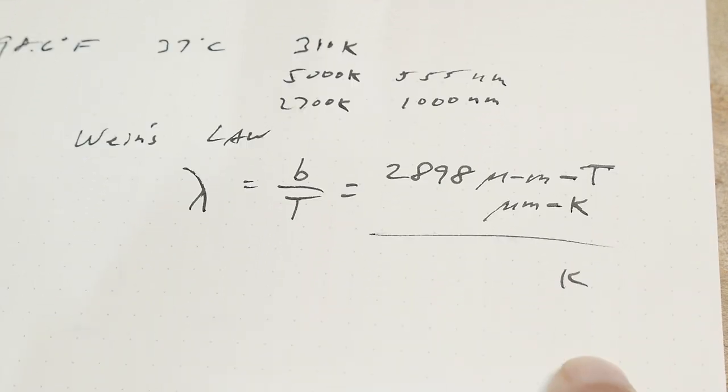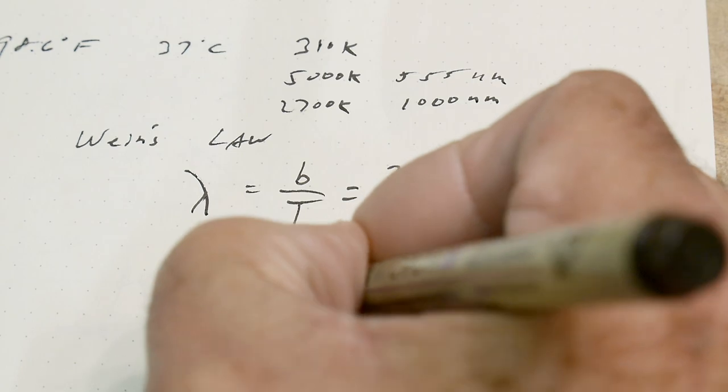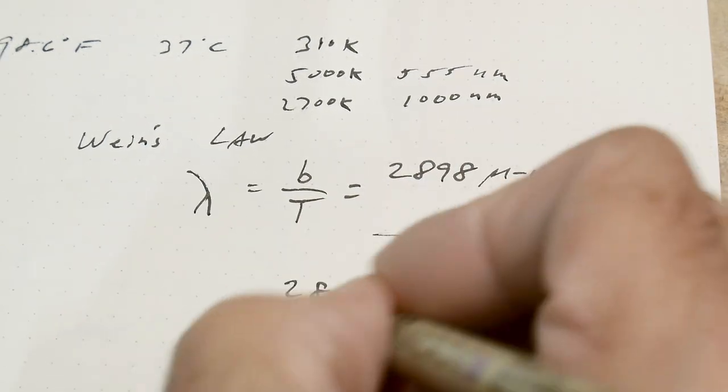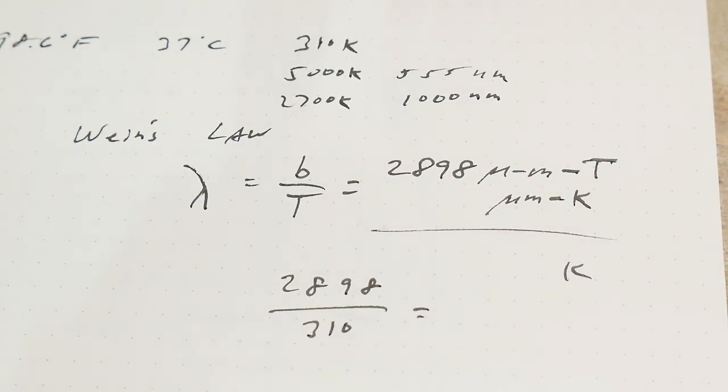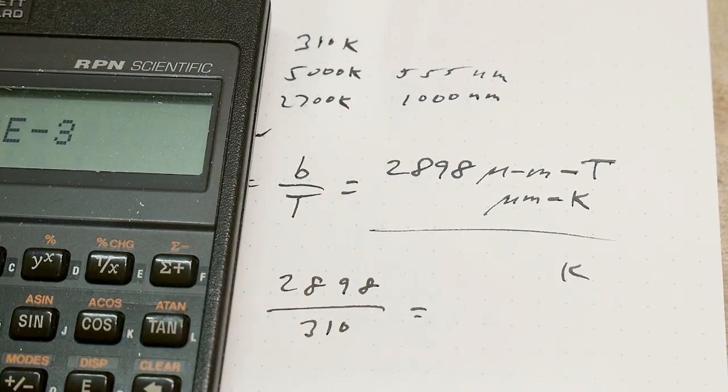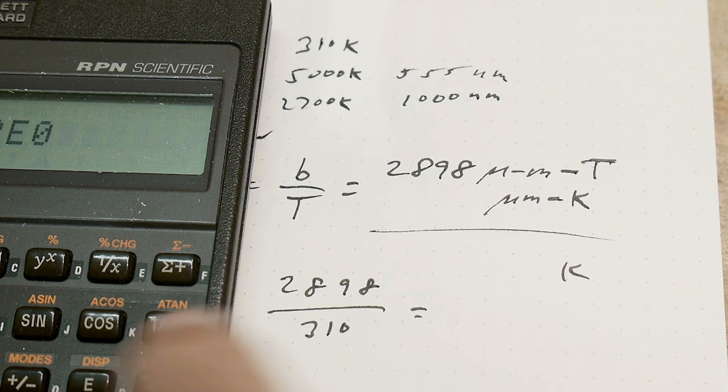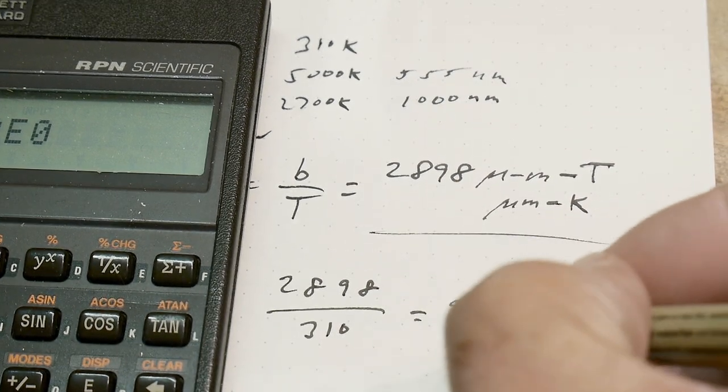Let's see, 2.898 divided by 310 is 9.3 microns.